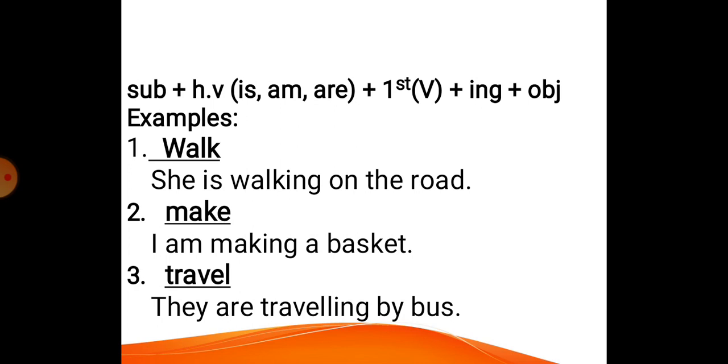Second form of verb is make. Remember that the words which are having e at their end, by applying ing with them, e must be omitted. So the subject I have chosen is I, but with I only am will be used as a helping verb. So make plus ing will become making. Basket is the object. So the sentence is: I am making a basket.